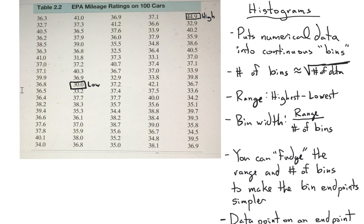A key piece is the range of the data. The range is just the highest data point minus the lowest data point. Here I've searched the data, the highest data point is 44.9 miles per gallon and the lowest is 30 miles per gallon. So our range in this case is 44.9 minus 30.0, which is of course 14.9 miles per gallon.